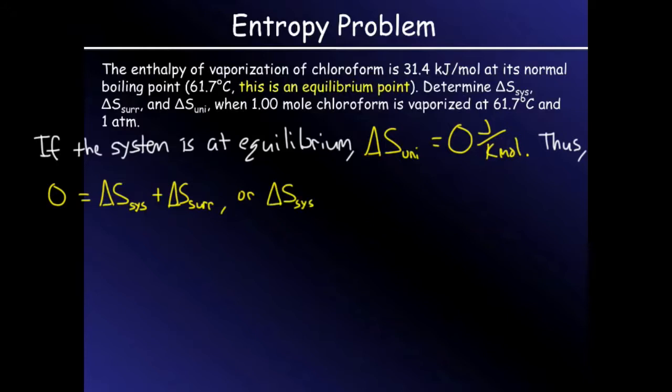So, if we write delta S universe being zero, equal to delta S system plus delta S surroundings, then we could rearrange this equation and recognize that at equilibrium, delta S system equals negative delta S surroundings.